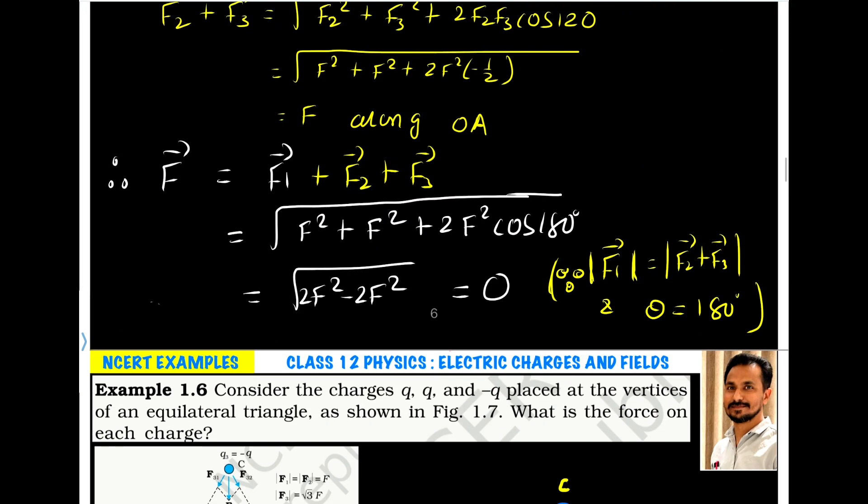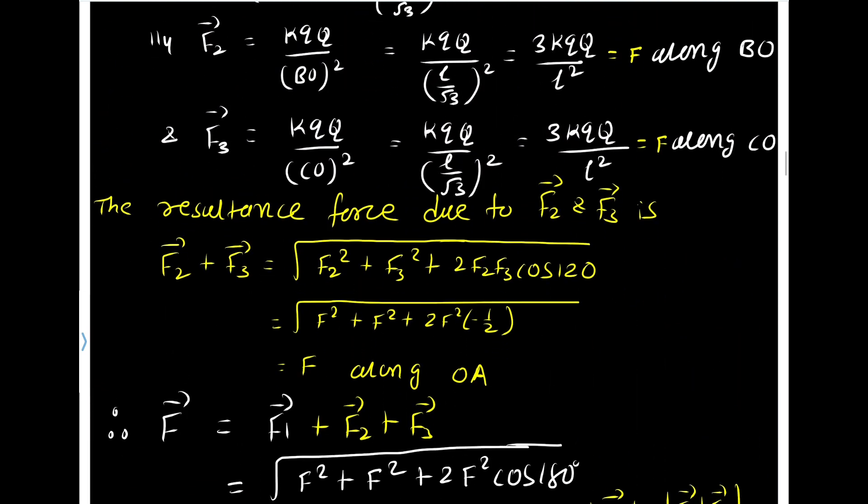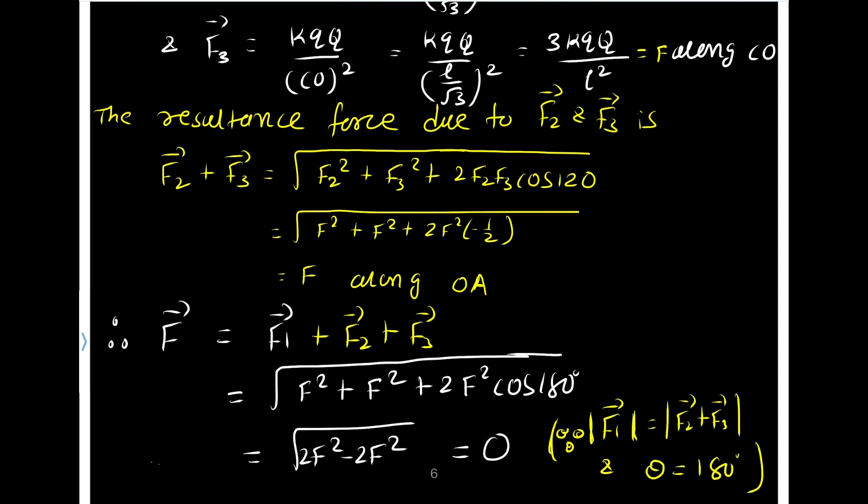Now we are adding this force to the third part. So here it is along O A. Now the net force acting on charge Q is F2 plus F3 plus F1. Now we know that the resultant of F2 and F3 is F and is along O to A. But the force acting on this charge Q due to the Q1, that is F1, is along this direction. This is A to O. So this force is also F and the resultant of F2 and F3 is also F. F1 is also F and resultant of F2 and F3 is also F and they are aligned at 180 degree.